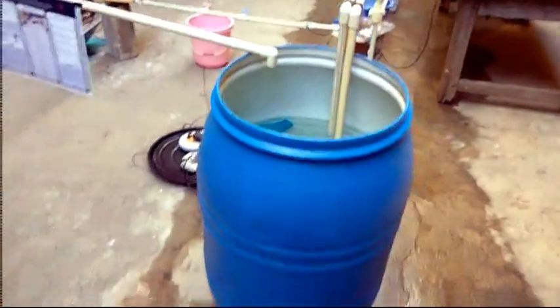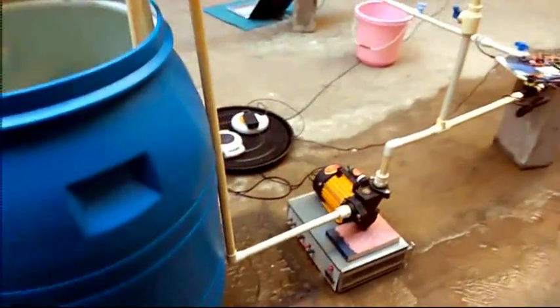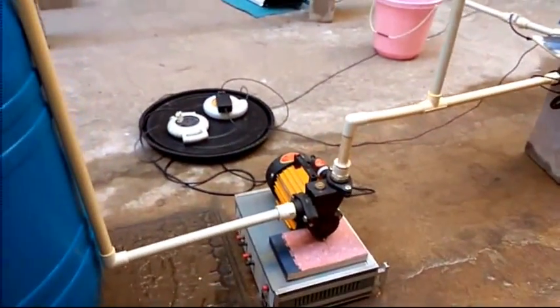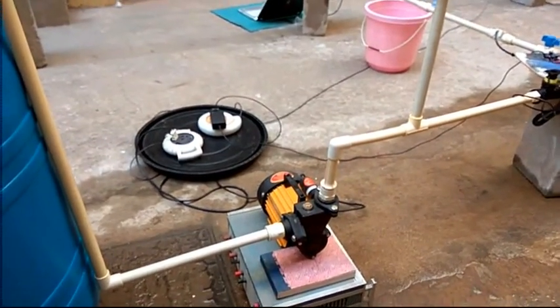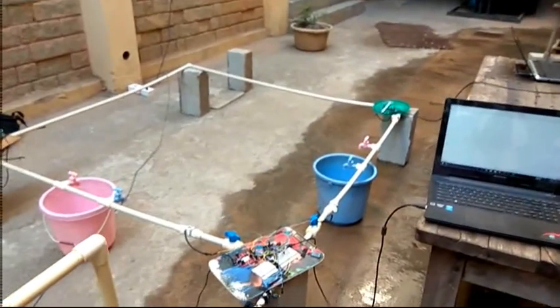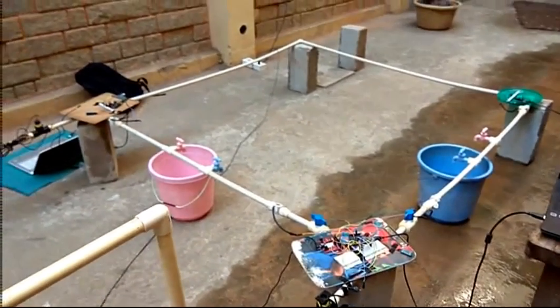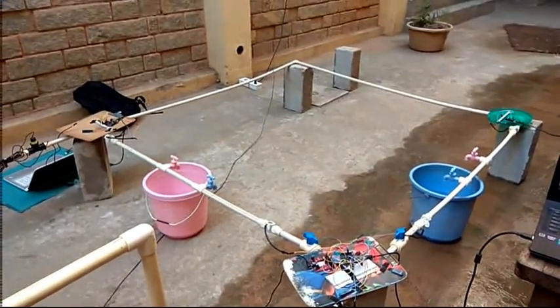This is the drum which behaves as the supply tank. And we have used a motor. This is a 0.5 HP motor for drawing water from the drum and supplying it through the pipelines. This is the branches of the pipelines. The left side one is branch one and the right side one is branch two.